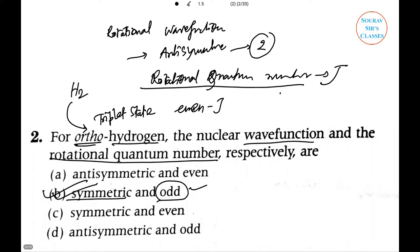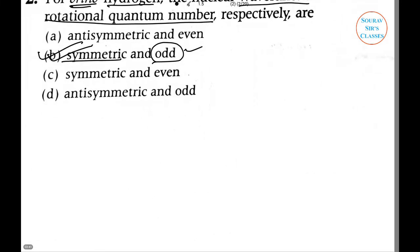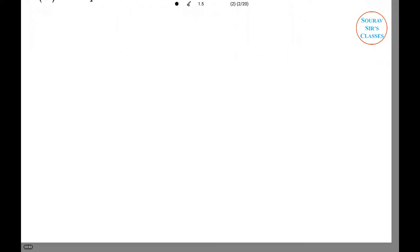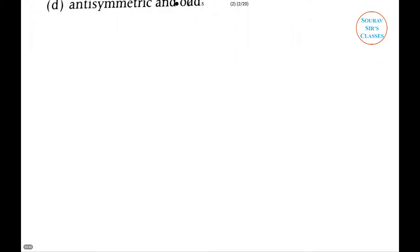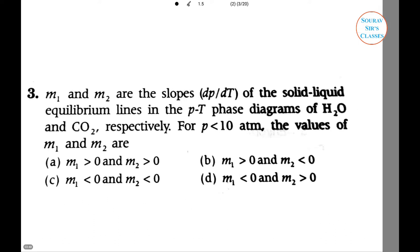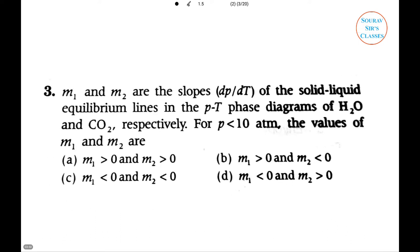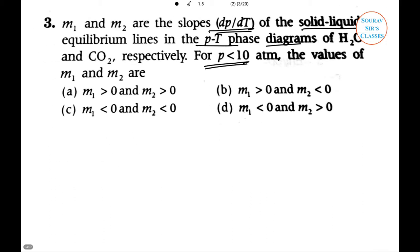Question three: m1 and m2 are the slopes dp/dT of the solid-liquid equilibrium lines in the PT phase diagrams of H2O and CO2 respectively. For p less than 10 atm, what are the values of m1 and m2?